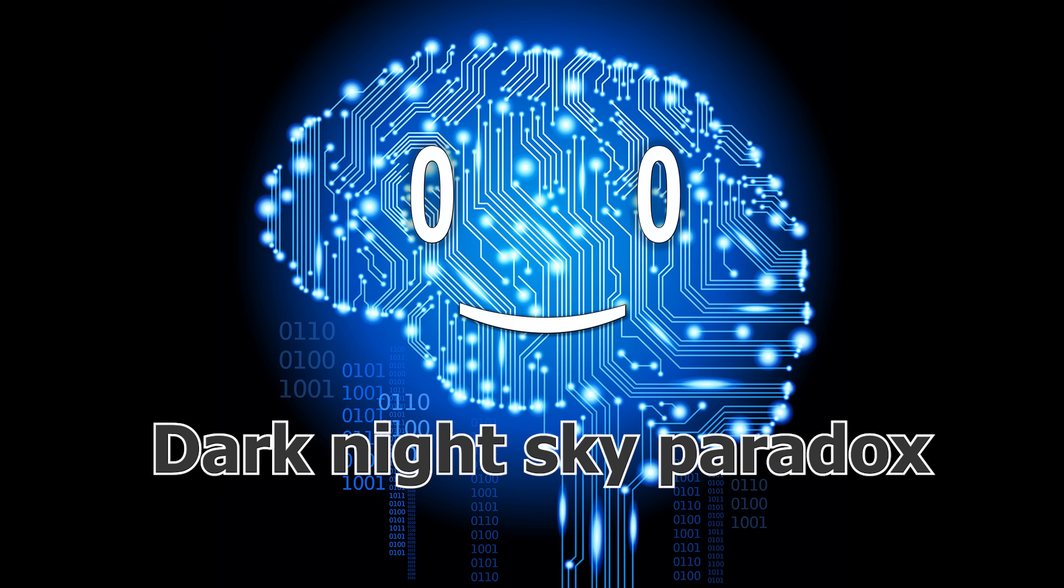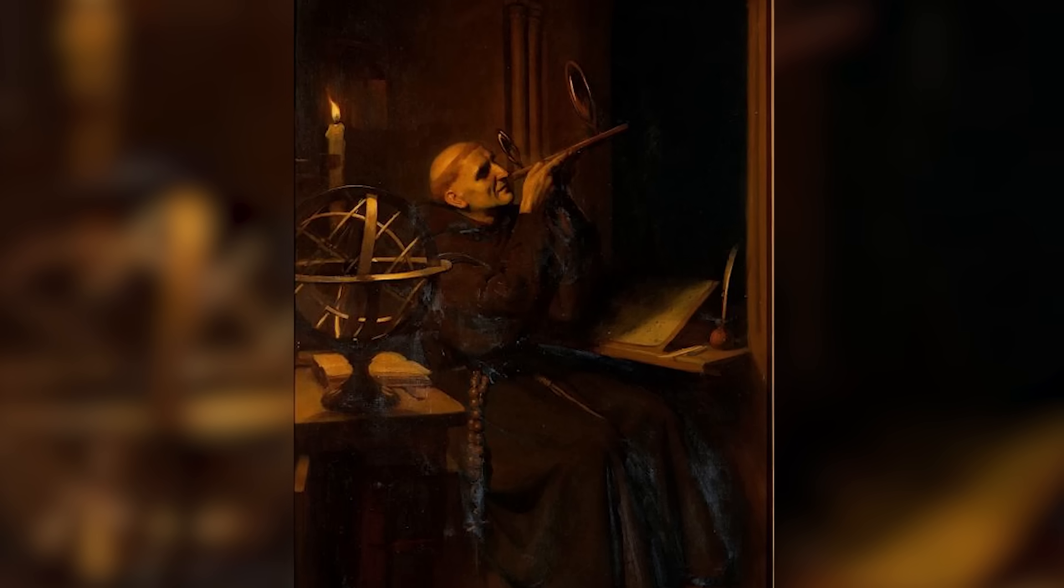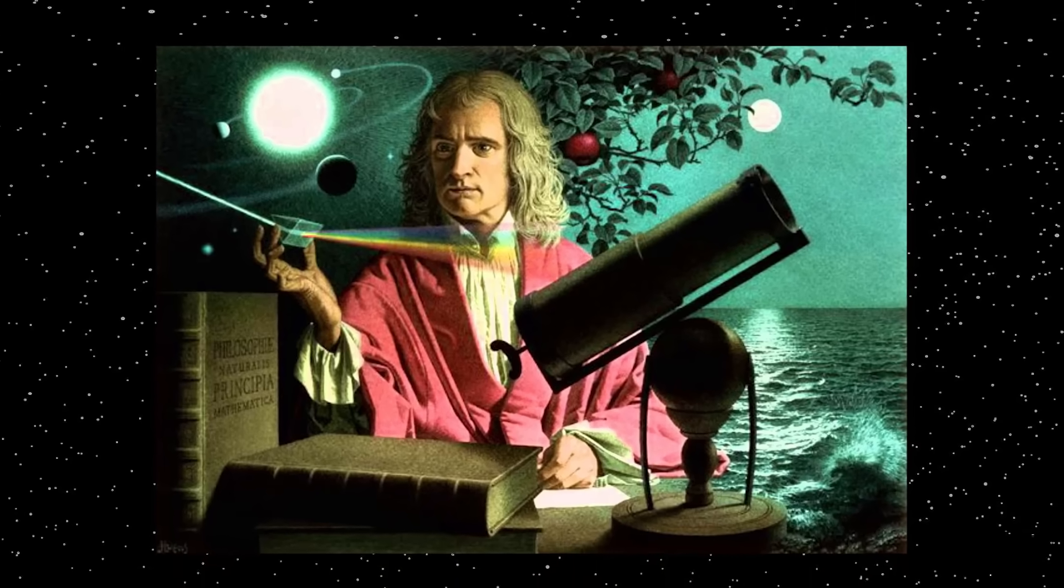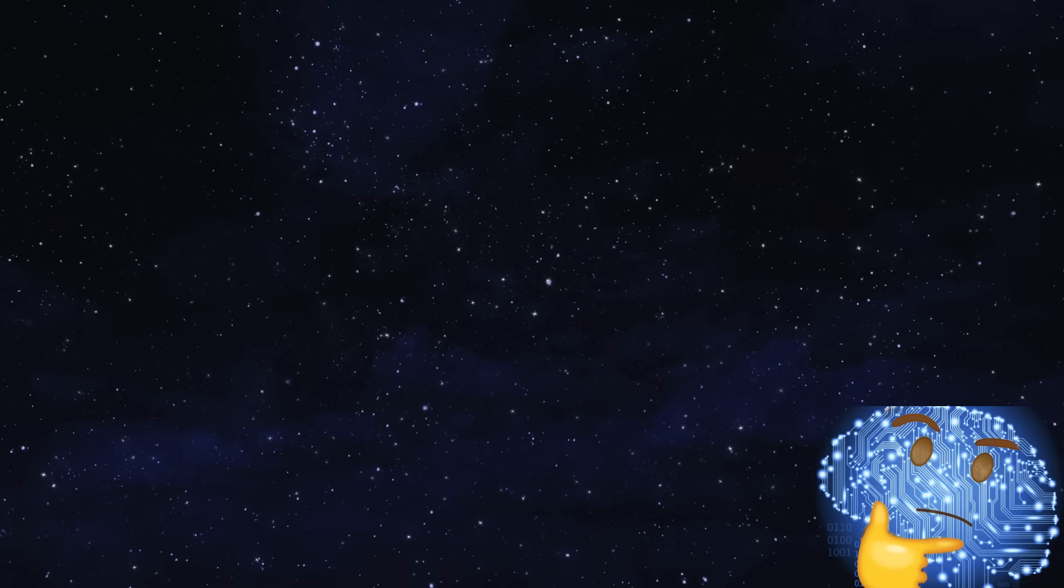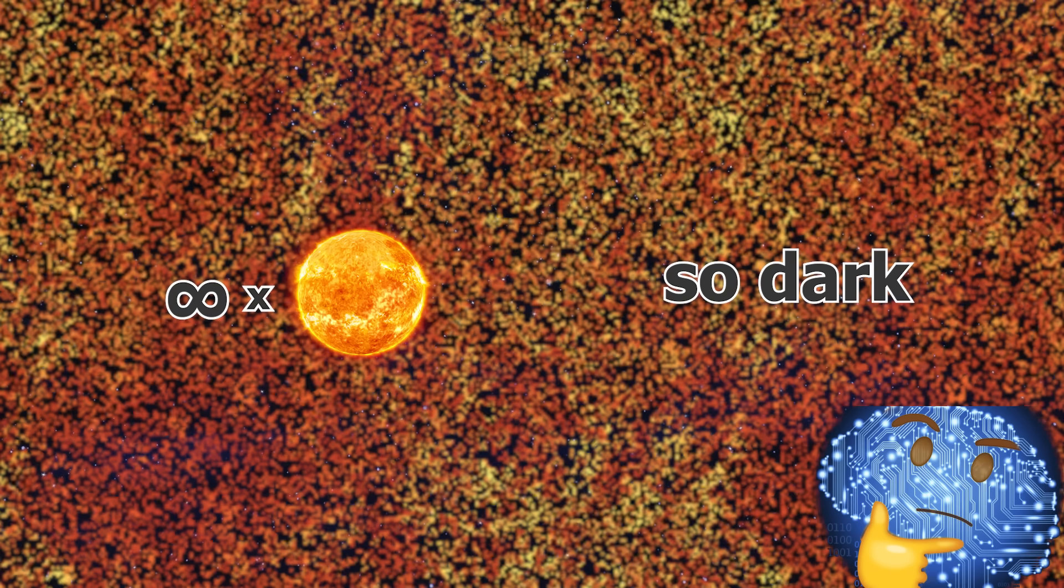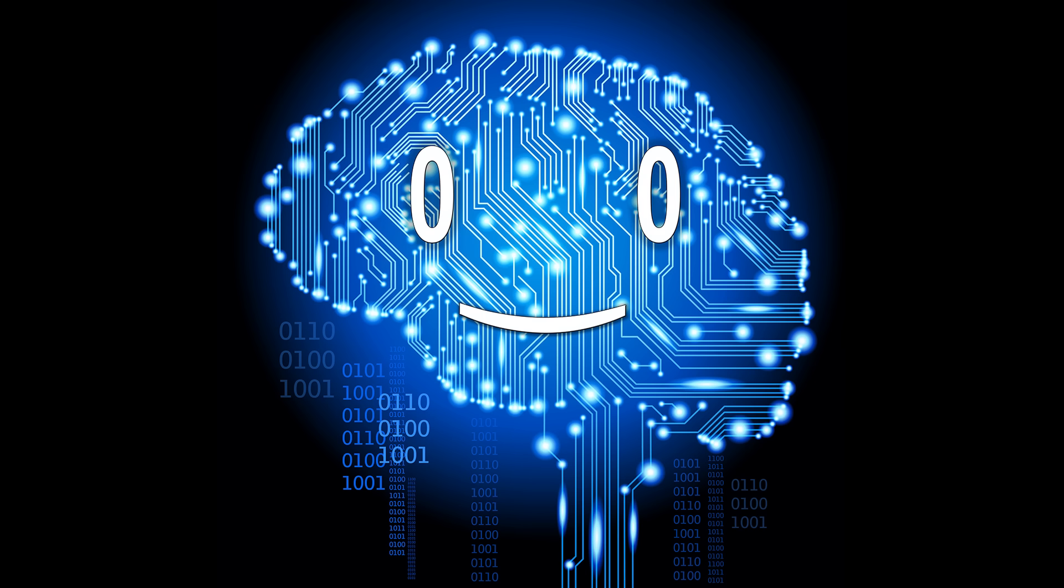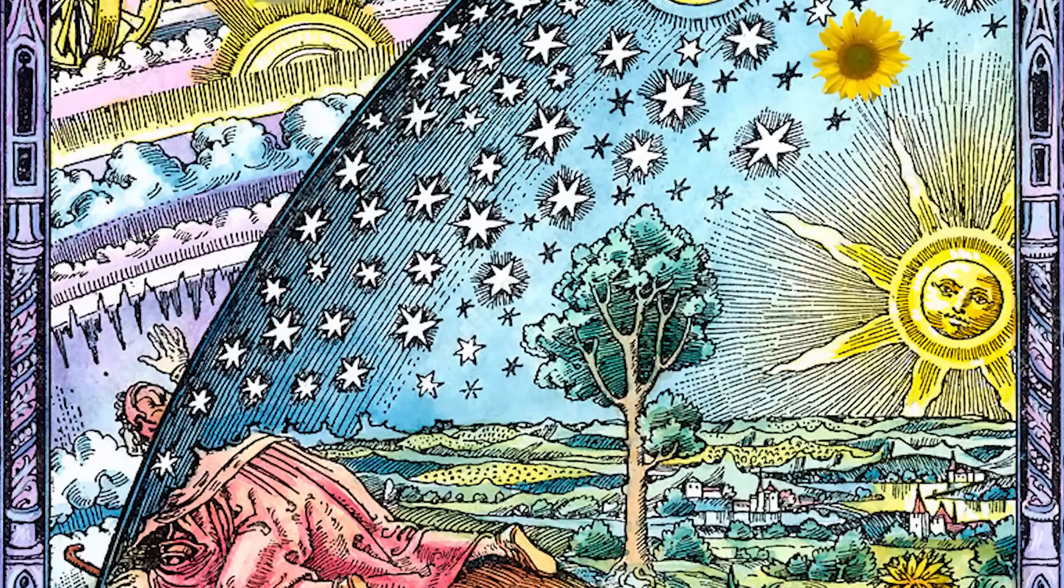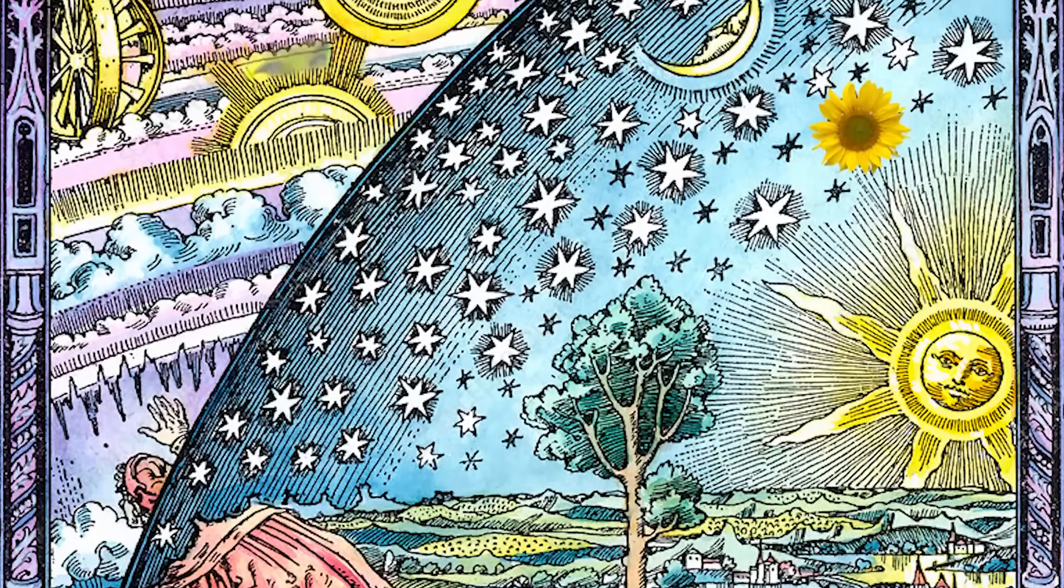This paradox appeared many times in scholar papers, from the early medieval ages till the 19th century, and it is asking why the night sky is so dark if there are an infinite number of stars in the universe. If that were the case, any point from the sky should have been a star, making it blindingly bright. At the time, the question made a lot of sense, as the scholars thought of the universe as a static and homogeneous system.